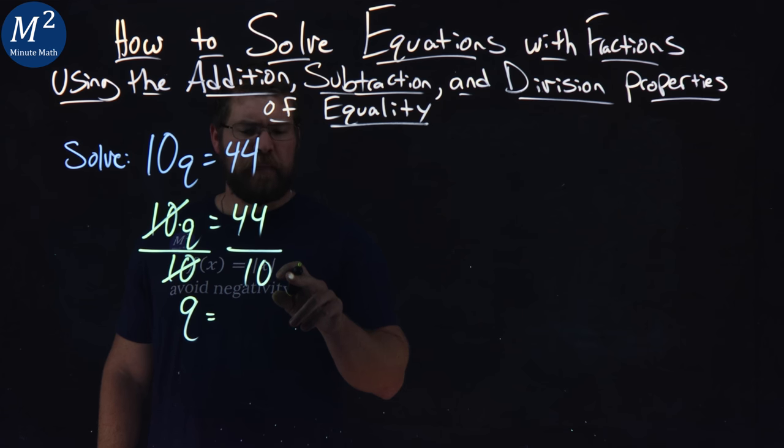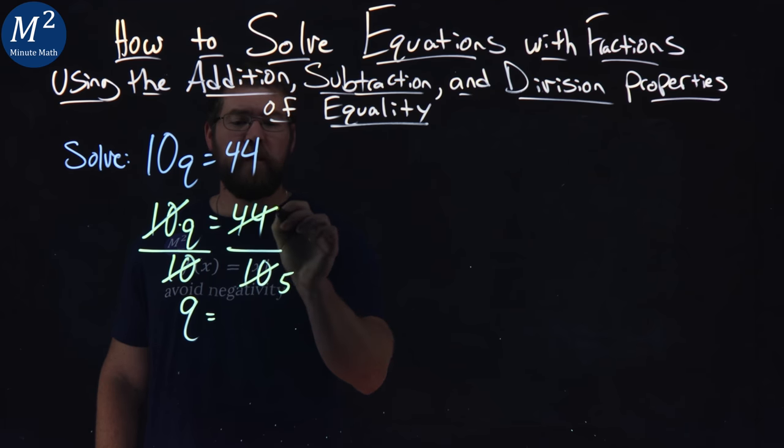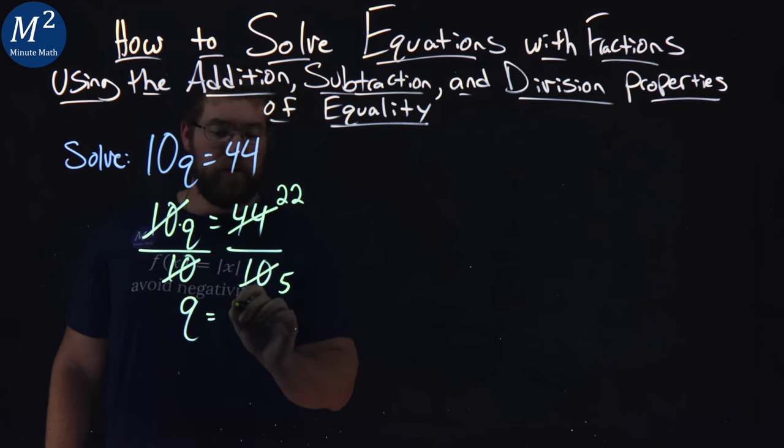Does that simplify? Well, both are divisible by 2. 10 divided by 2 is 5, and 44 divided by 2 is 22. So now q is 22 over 5.